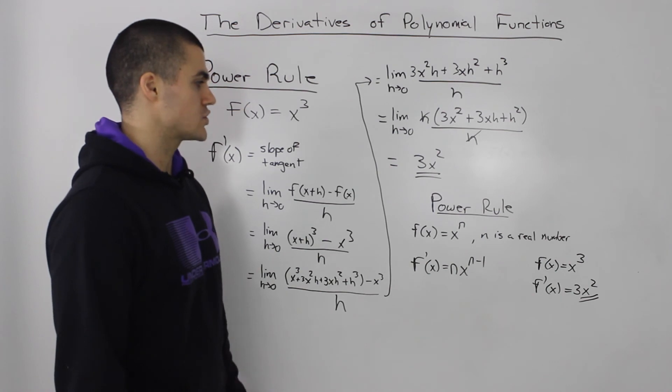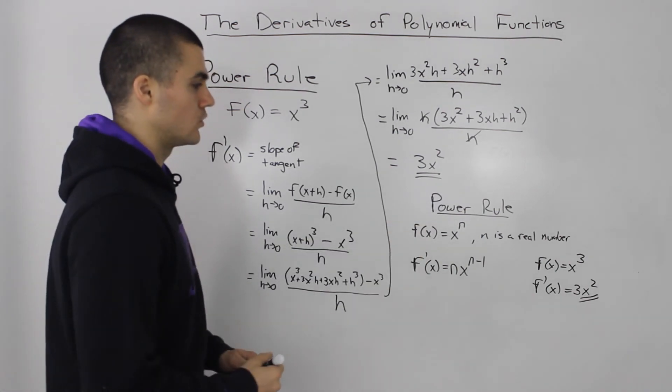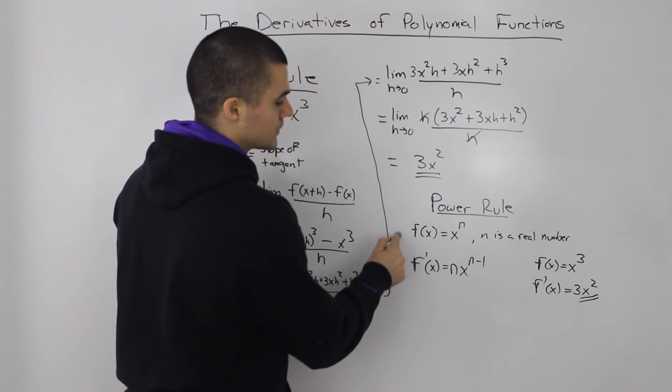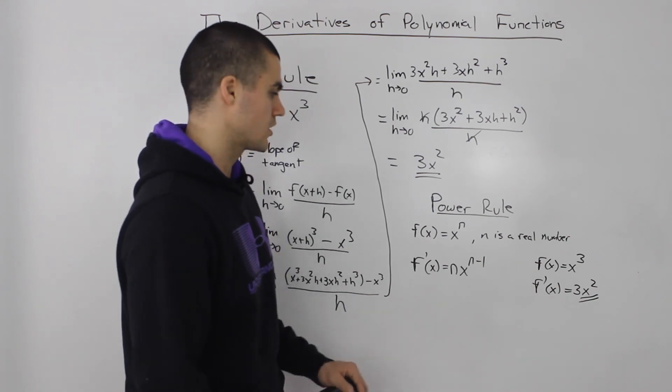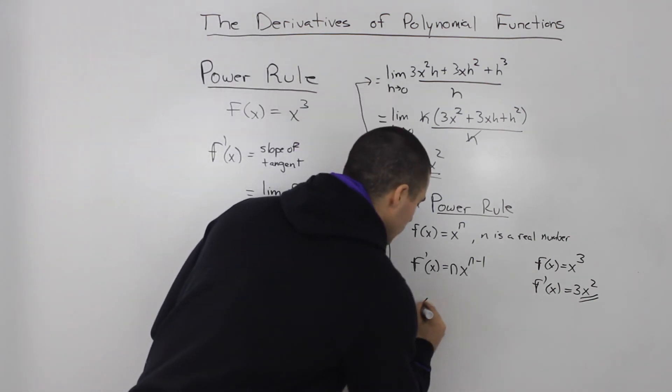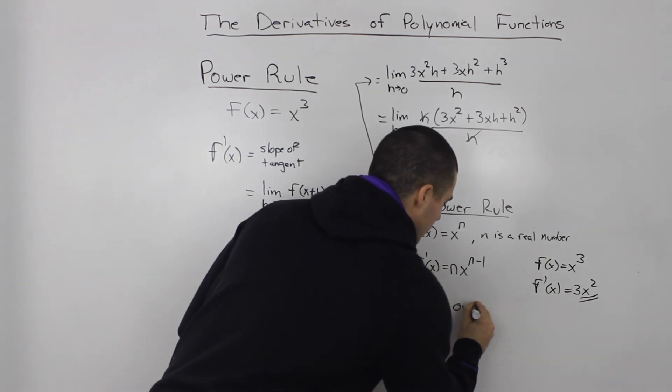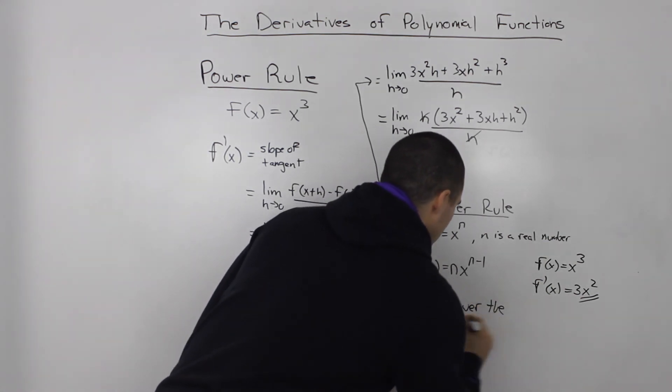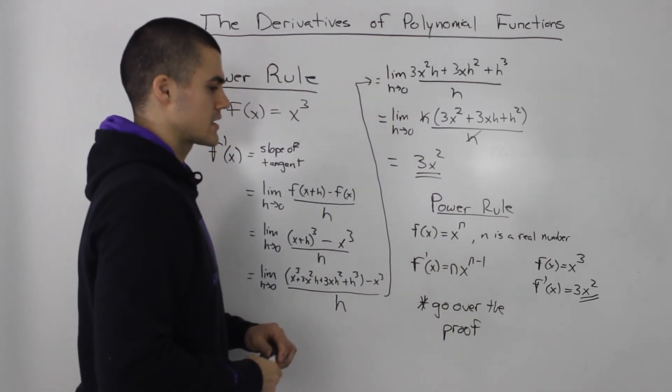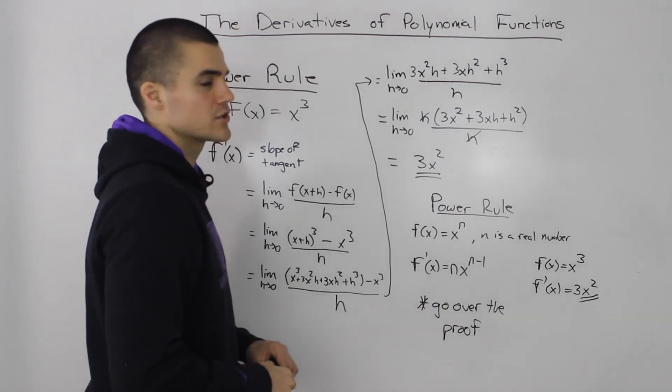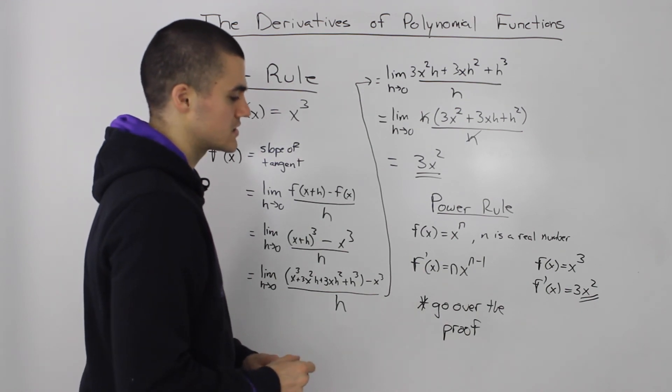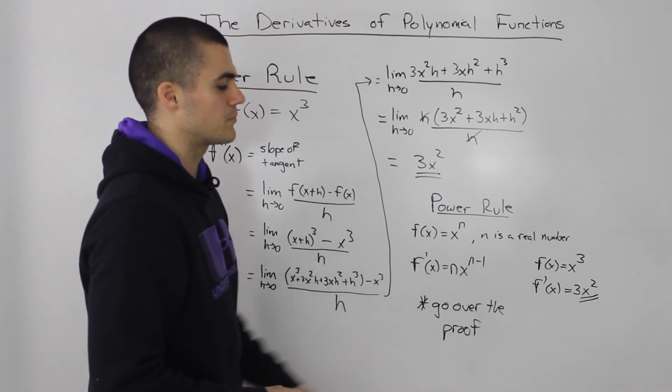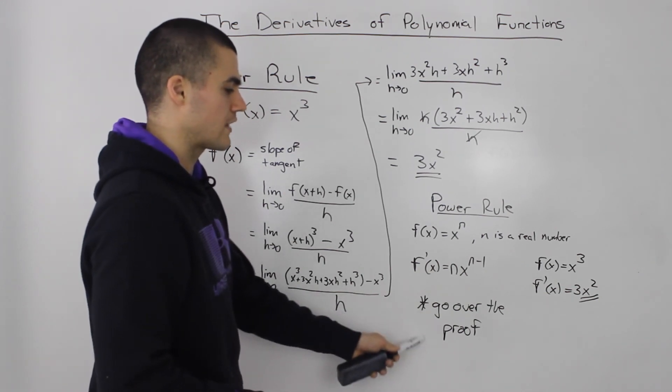One more thing I want to mention about the power rule is that I just told you what the rule is, I didn't go over the proof for it. The proof is actually in the examples in your book, but make sure you go over the proof. It's pretty challenging, but it may show up on your test. Maybe your teacher will throw a proof on your test, maybe not—depends on the teacher. But tougher teachers will put a proof. So yeah, go over that in your book.